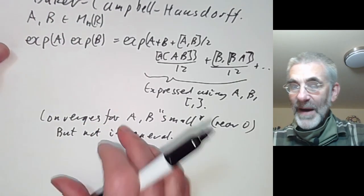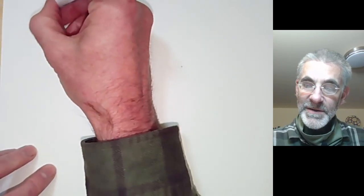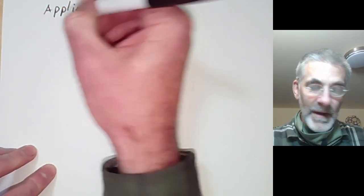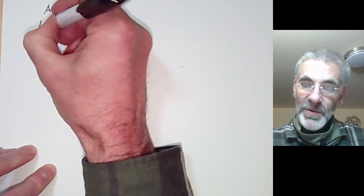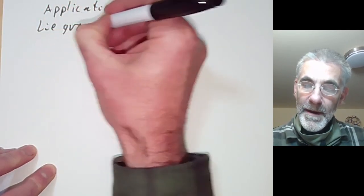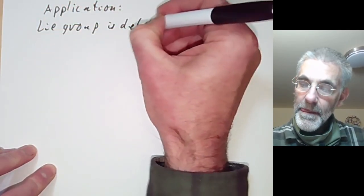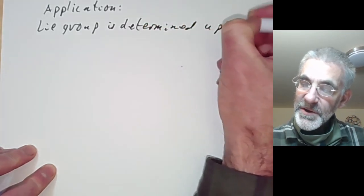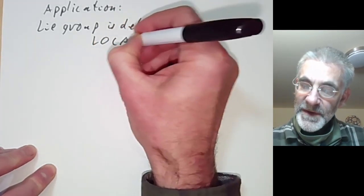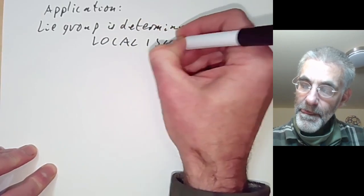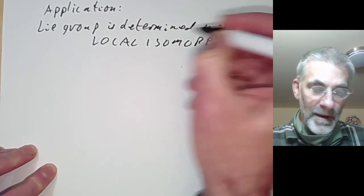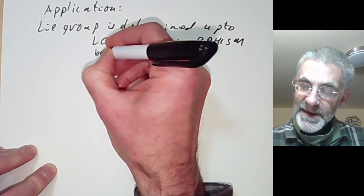Before proving the Baker-Campbell-Hausdorff formula, let's see some applications. The first application is that a Lie group is determined up to local isomorphism by its Lie algebra.